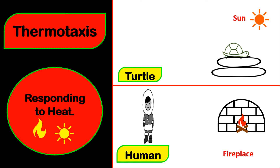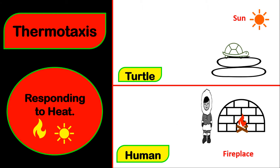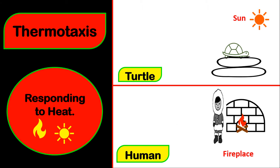For us, for example in humans, once we are cold, we go somewhere that is warmer. We may move towards the fireplace to get some warmth. These two examples are examples of being positively thermotactic.